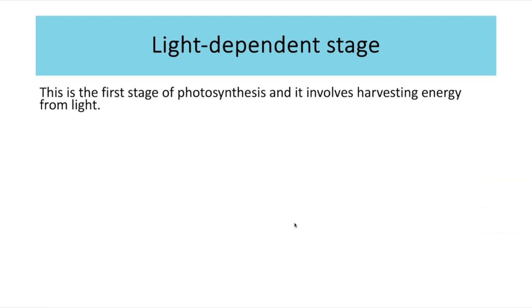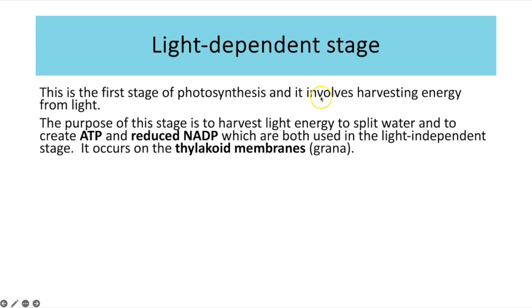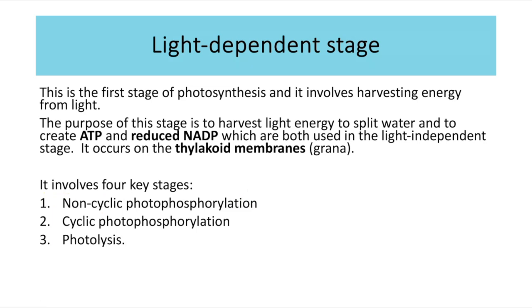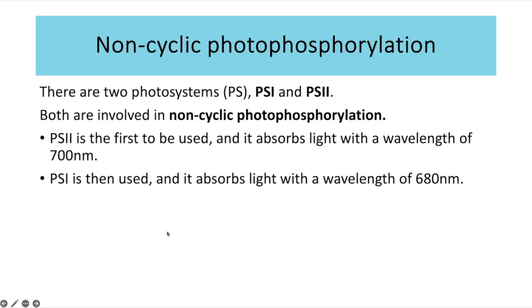Moving on to the actual reactions of photosynthesis, we begin with the light-dependent reactions. This involves the harvesting of energy from light and the purpose of this stage is to use that light energy to split water and to create ATP and the reduced coenzyme NADP, which are then needed in the subsequent light-independent reactions. The light-dependent reactions happen on the thylakoid membrane or the grana. There are four key steps: non-cyclic photophosphorylation, cyclic photophosphorylation, photolysis and chemiosmosis.